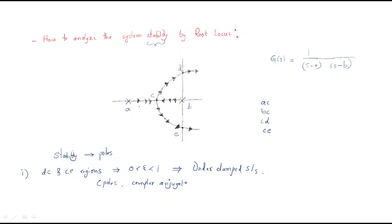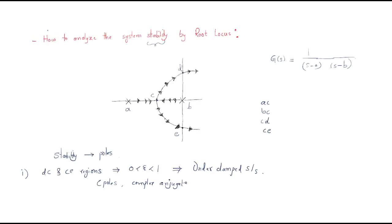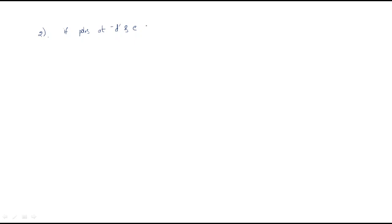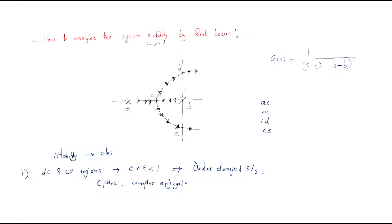The second stability condition is when the poles are exactly at points D and E — that is, exactly on the imaginary axis. If the two poles are exactly at D and E, then there is no damping ratio, and the system is a marginally stable system. Whenever poles are on the imaginary axis, it is exactly a marginally stable system.